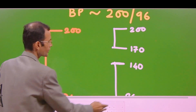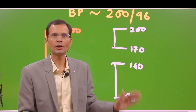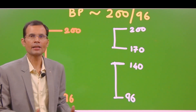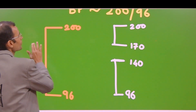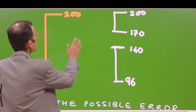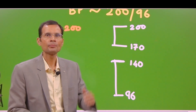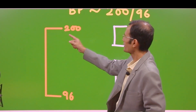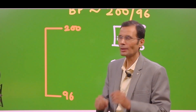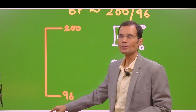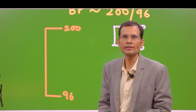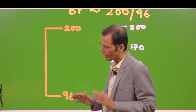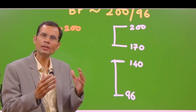Let's assume the blood pressure in this individual to be 200/96. When you measure the blood pressure by auscultatory method, you raise the pressure in the BP cuff — let's say up to 230 mmHg — and then start lowering it. You should get the first sound at 200 mmHg, noted as systolic. The sounds continue and finally disappear at 96, noted as diastolic. So you record 200/96 mmHg. This is what should happen normally.